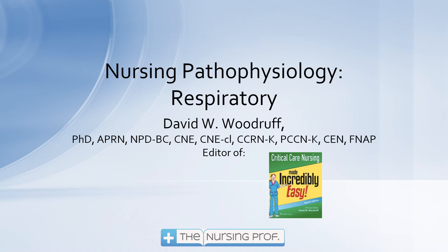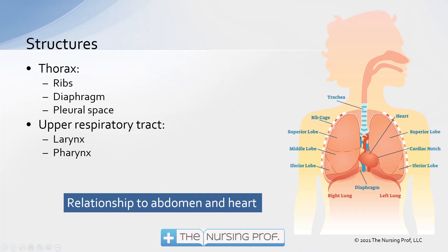Hello and welcome to Nursing Pathophysiology Respiratory. Today we're going to talk about our respiratory system, starting with the structures of the respiratory system, beginning with the thorax, which includes the ribs, the diaphragm, and the pleural space, looking over at the picture on the right.